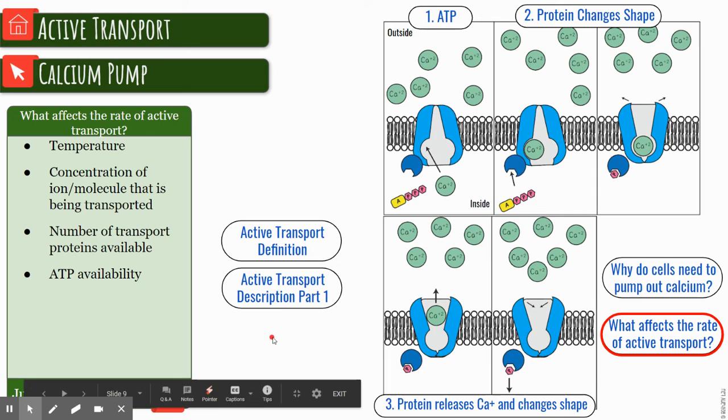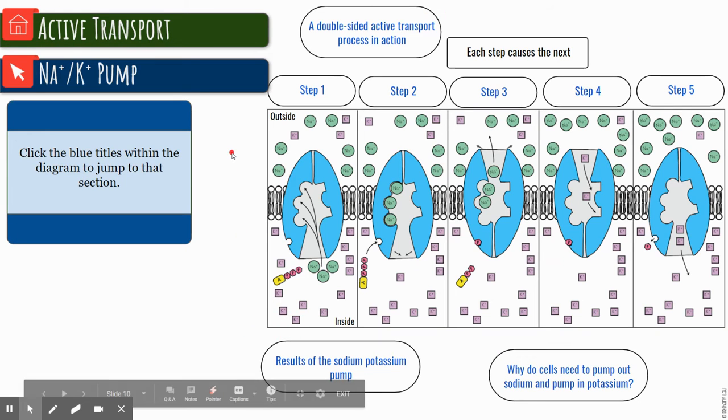So what happens with the rate of active transport? What can cause it to change? You're going to see these things keep coming up: temperature—higher temperature, faster rate; the concentration differences on one side versus another; the number of protein channels or transport proteins; and in this case we have an extra one, how much ATP is actually present.